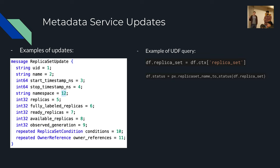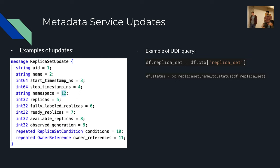If you're interested in how the update might look, it might have a name, ID, start/stop time, the replicas in the replica set update, maybe some conditions, and then you can query that from the UI. Here's an example of a UDF — you can query a replica set from the context or get the status of replica sets using a specific function.